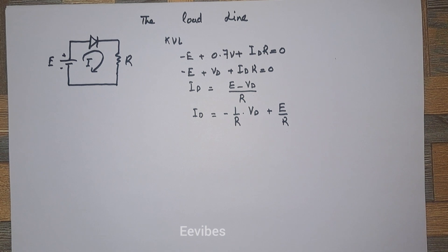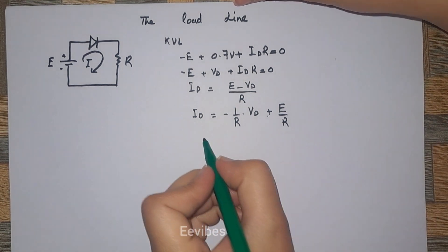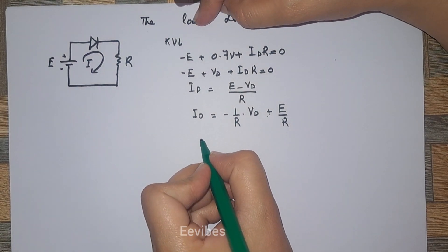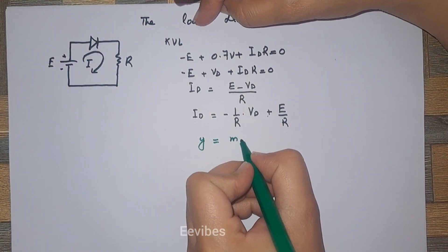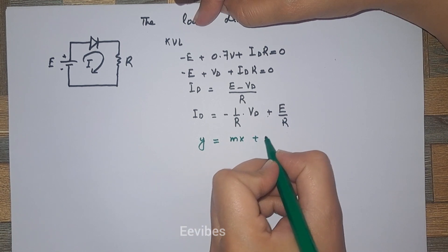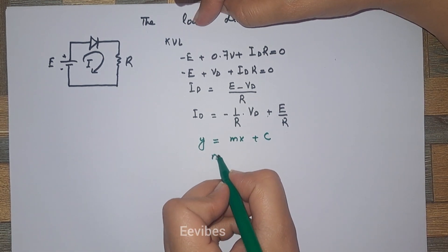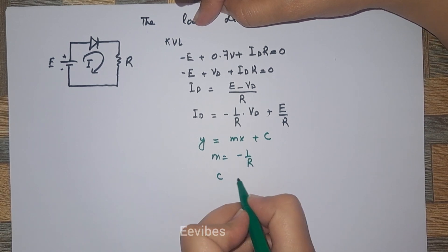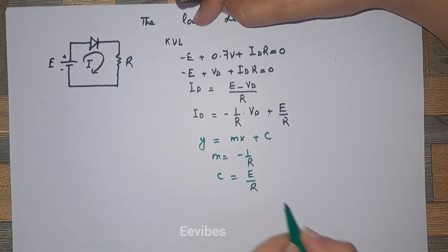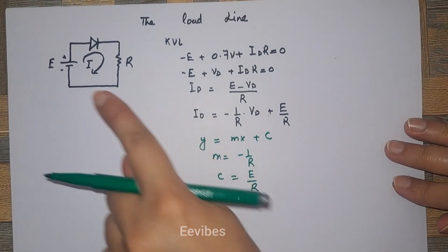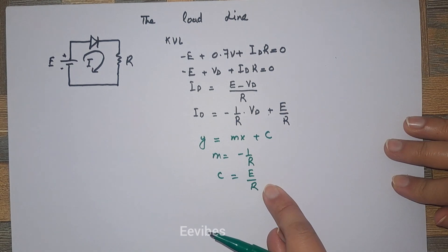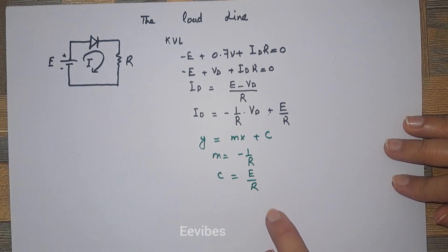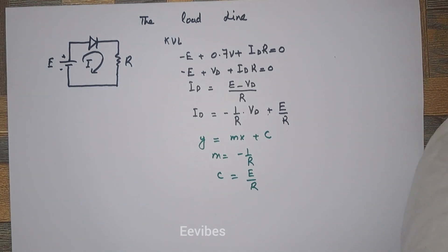If you closely look at this equation, you can clearly see that it resembles the straight line equation written as Y equals MX plus C, where slope M equals minus 1 over R and intercept C equals E over R. So the circuit behavior has been represented in terms of a straight line equation, and this can also be shown on a graph.